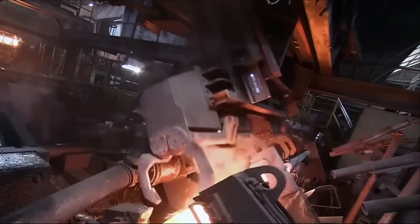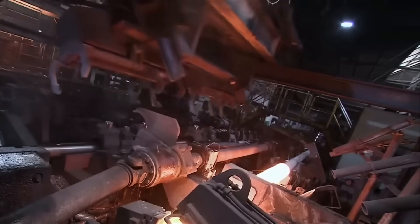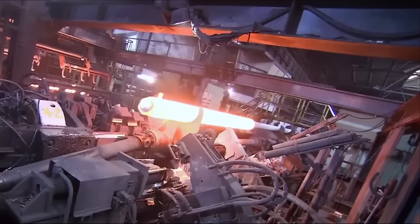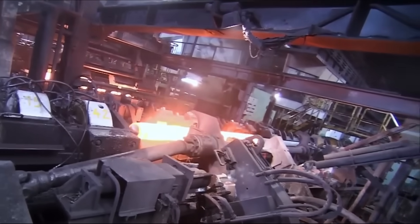The heated billets are automatically forwarded to the drilling mill. Ingots are drilled at a speed of 1 meter per second. This process transforms the ingots into tubes.